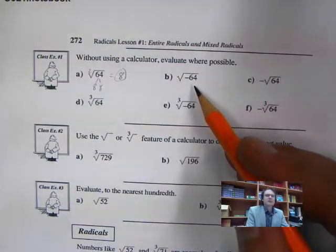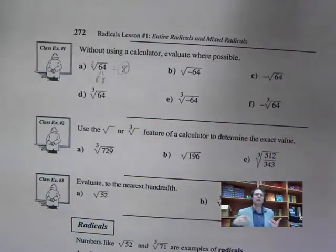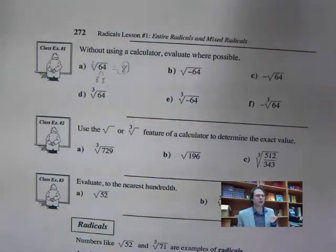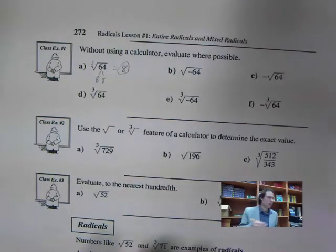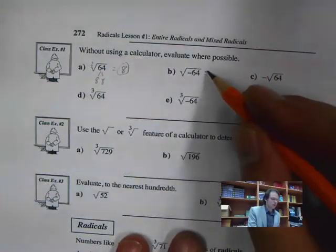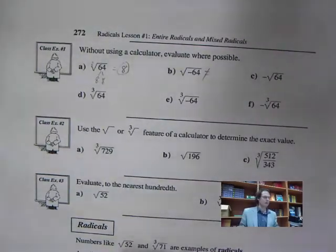For the square root of negative 64, to get a negative result we would need a negative multiplied by a positive. But the two numbers have to be identical — both either negative or both positive. So there is no answer for the square root of negative 64.